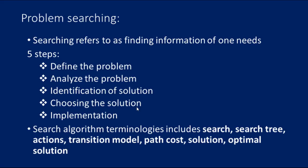Action is a description of all the available actions to the agent. Transition model is a description of what each action does, and can be represented as a transition model. Path cost is a function which assigns a numeric cost to each path. Solution is an action sequence which leads from a start node to the goal node. Optimal solution — if a solution has the lowest cost among all solutions, it is said to be an optimal solution. These are all the search algorithm terminologies and their definitions.